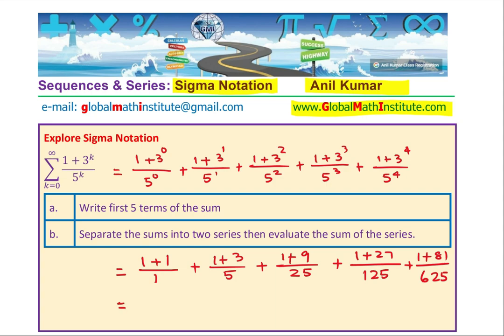And finally, we can write the terms in simplified form, so 1 plus 1 over 1 is 2, plus 4 over 5, plus 10 over 25, plus 28 over 125, plus 82 over 625. So these are our first 5 terms. Some of you could simplify this, but I will leave it like this here. So we have done the first part, which is how do we write the first 5 terms of this particular sum, but we are not adding it up.